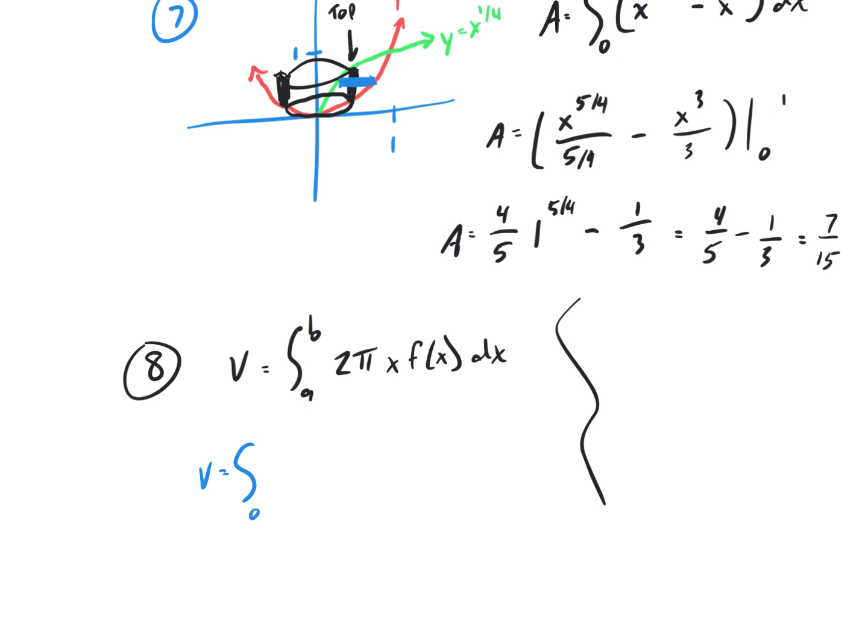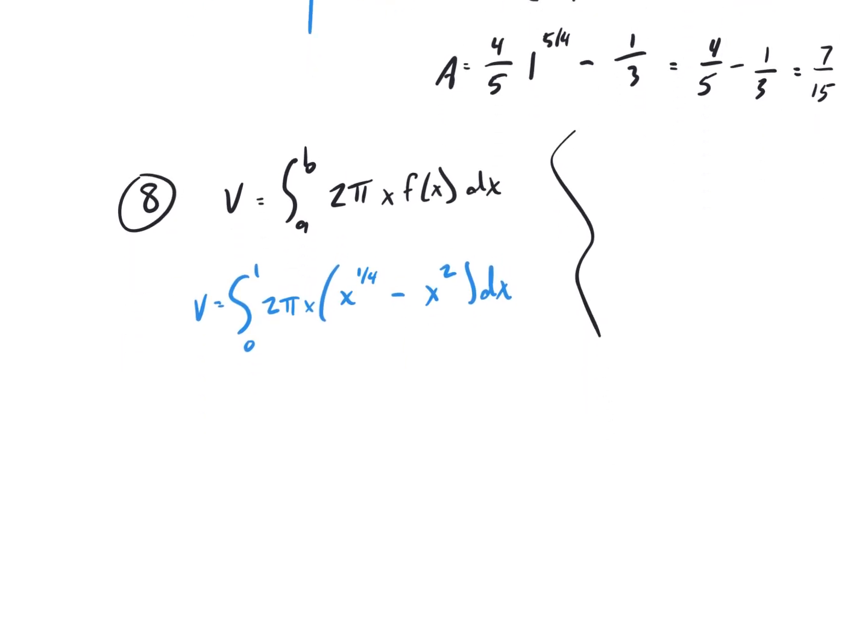V equals integral. The bounds, just like the previous problem, are from 0 to 1, 2 pi x, and then in parentheses, top minus bottom, same as before, x to the 1 4th minus x squared, dx. We can factor the 2 pi out in front, and then I think before I take the antiderivative, I've got to distribute the x into the parentheses, and it becomes x to the 5 4ths, and then x cubed. Similar to the last problem, but we haven't done the antiderivative yet. So, this first term, add another one to that, and it's 9 4ths over 9 4ths, and it's x to the 4th over 4, evaluated over the bounds from 0 to 1.